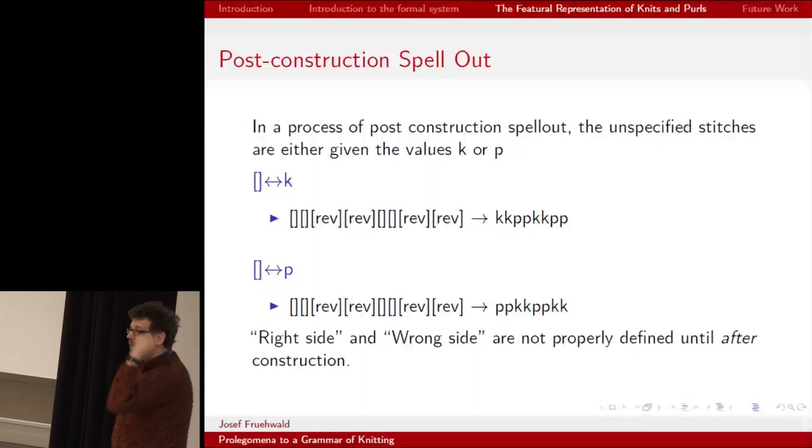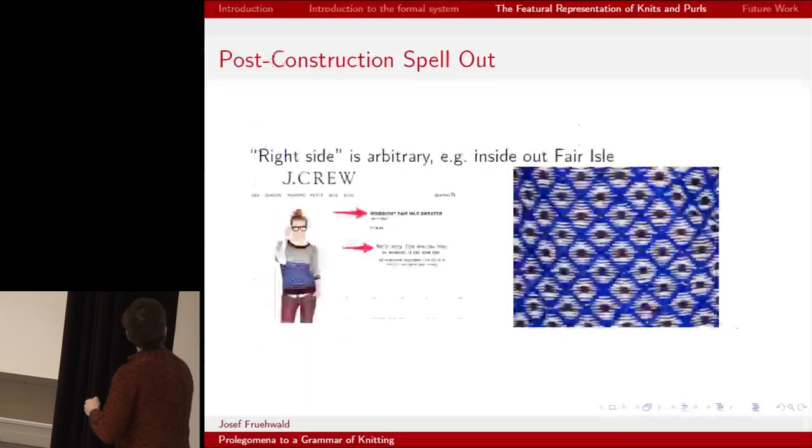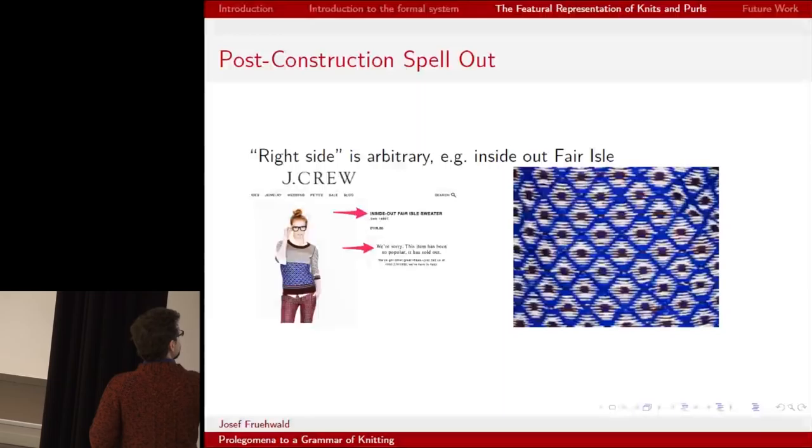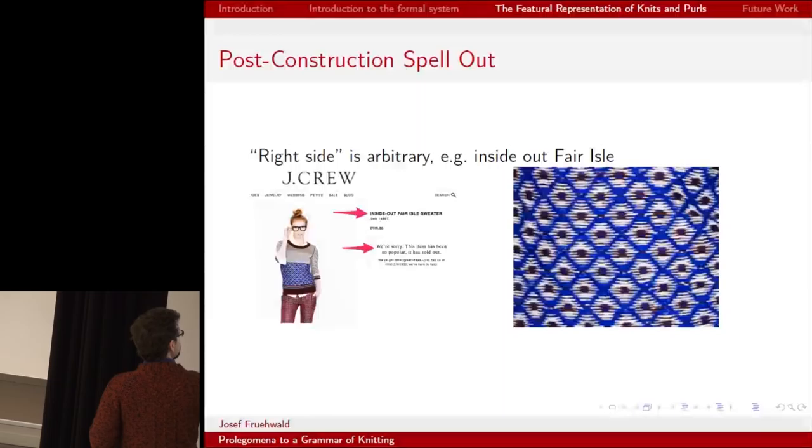This means that right side and wrong side are not a property of the formal system, but really of post-construction spell-out. There is evidence that right side is arbitrary. For example, this inside-out Fair Isle jumper, which has the color stranding on the outside. And apparently it was so popular it sold out.